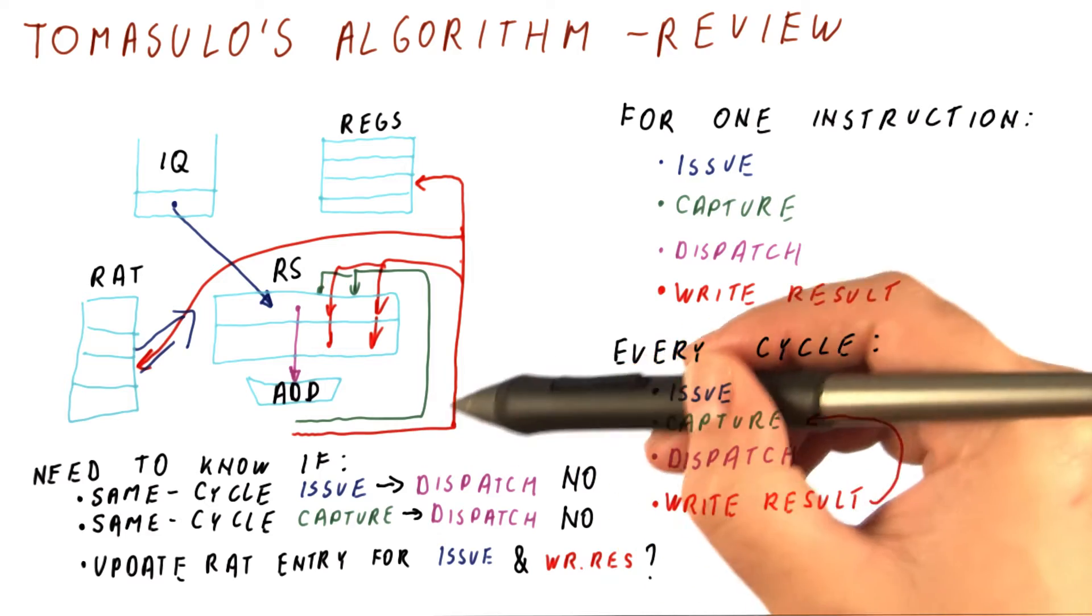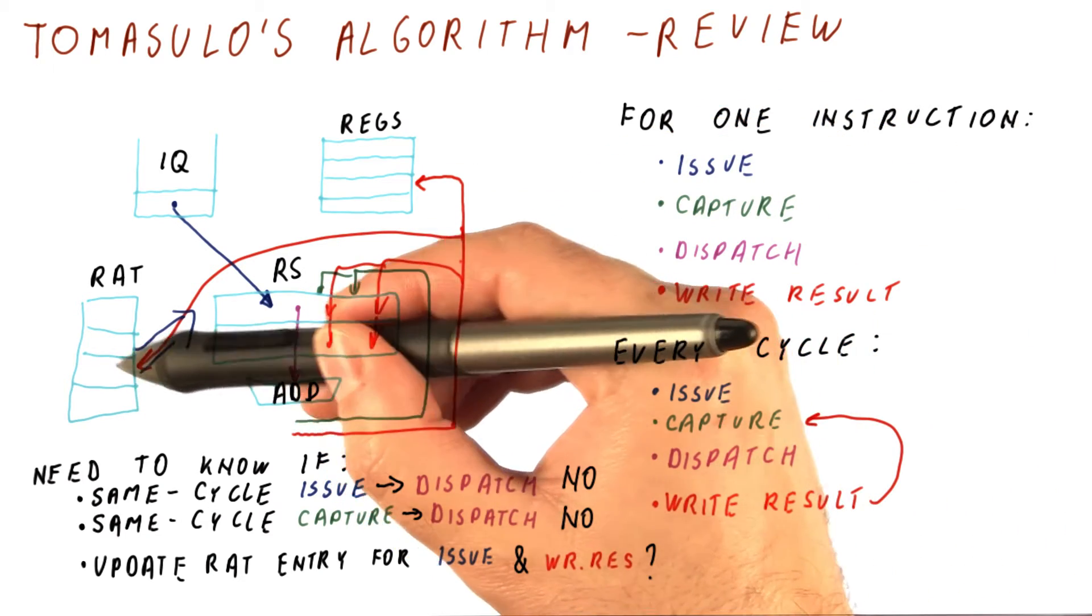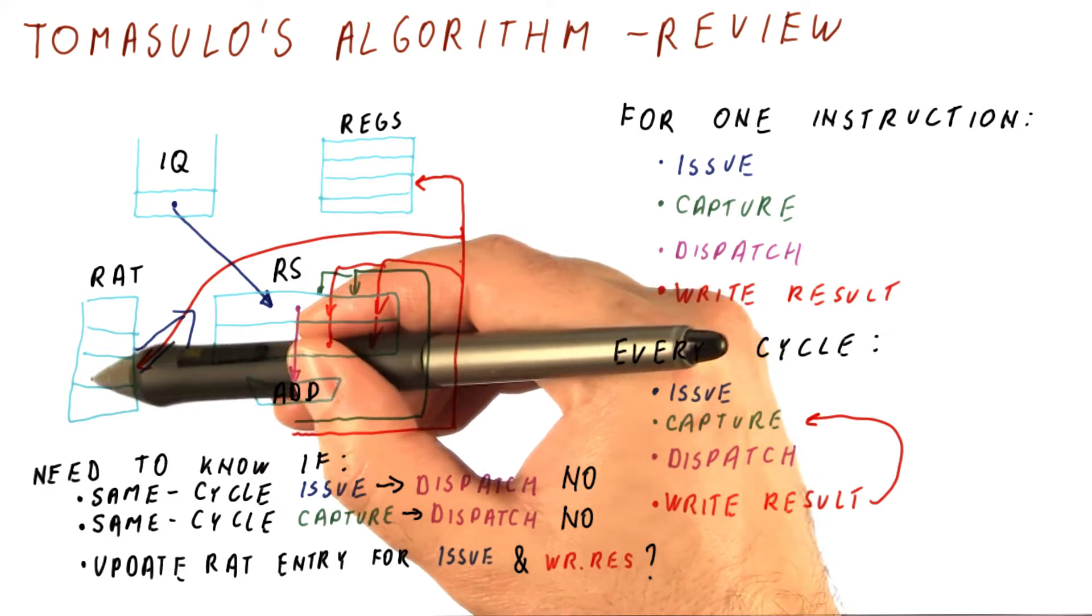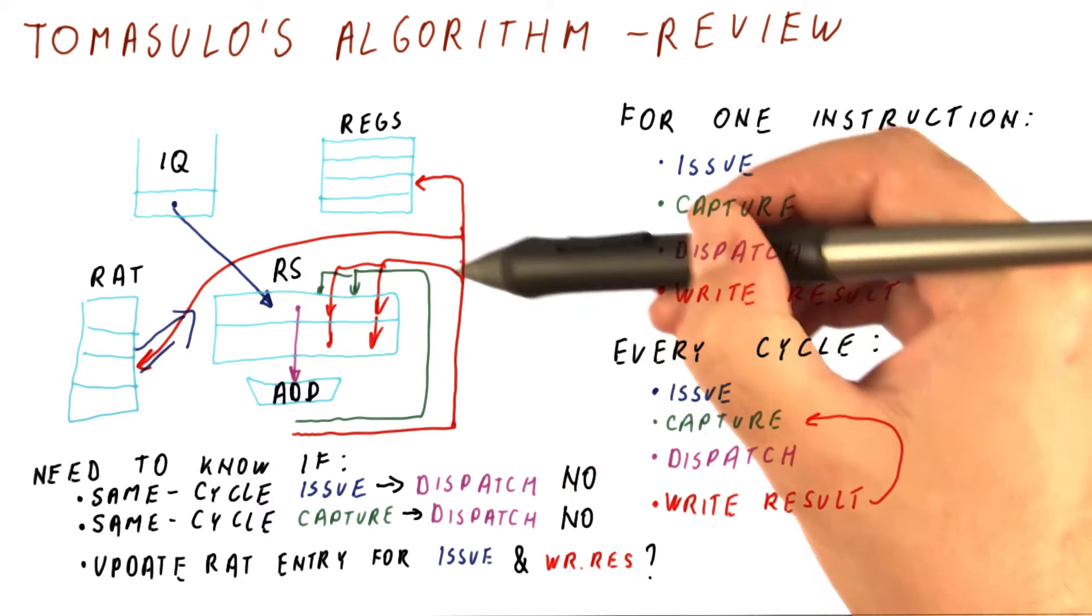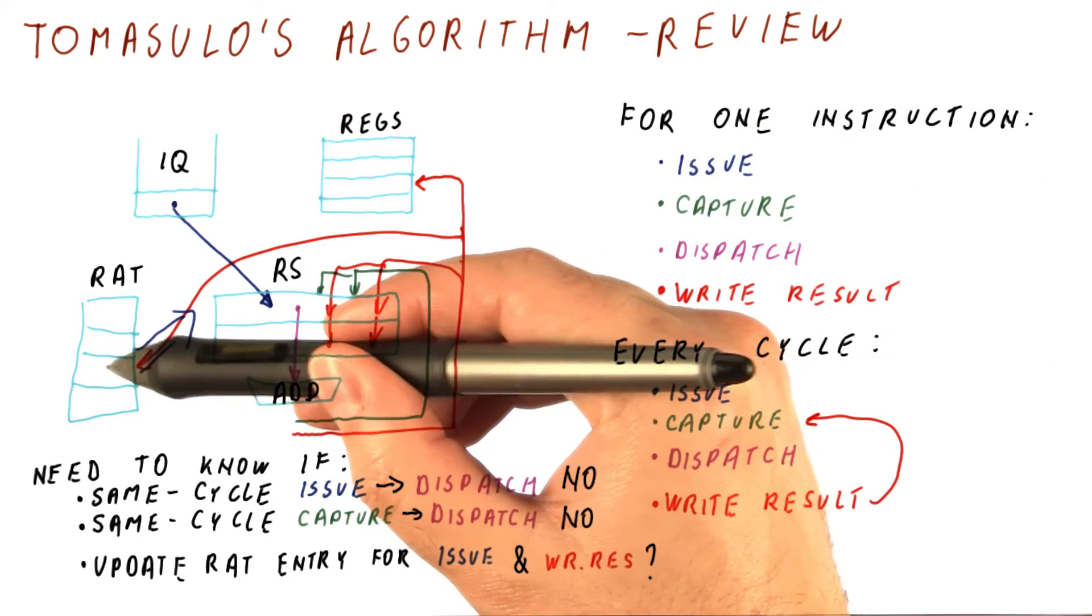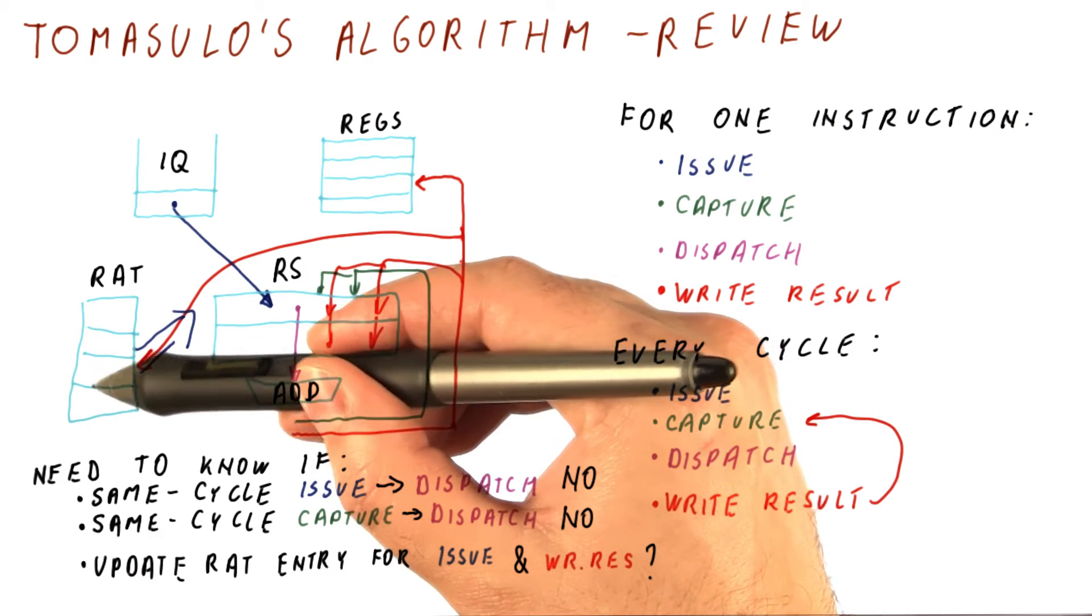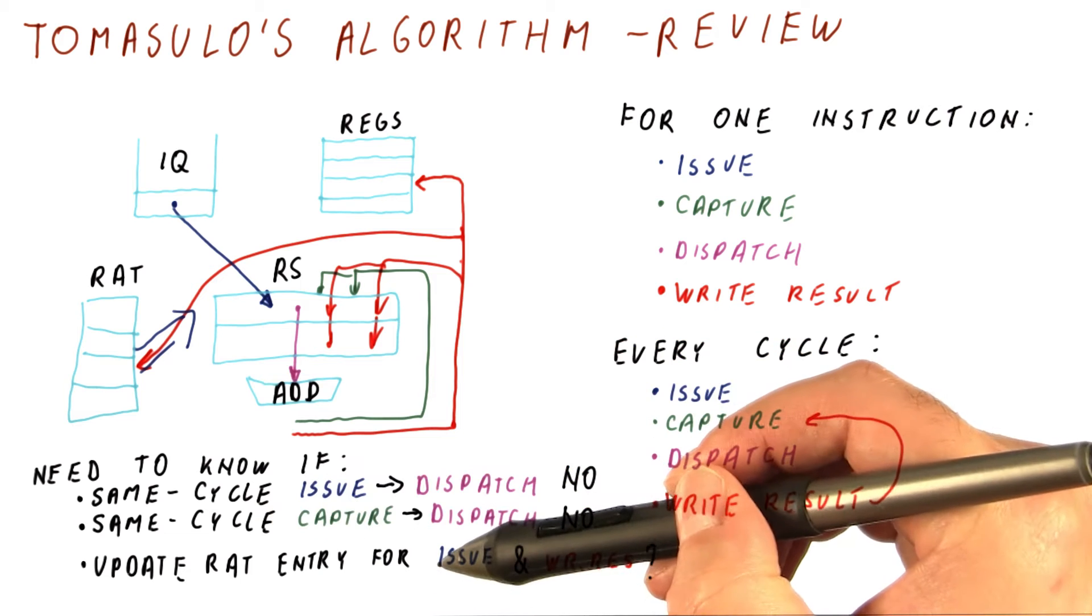Meanwhile, the instruction that is broadcasting also needs to update the RAT that corresponds to its destination operand. So if the instruction that is being issued and the one that is writing its result have the same register that is their destination, then this RAT entry needs to be sort of updated twice. So can we do that?